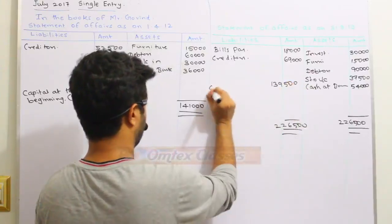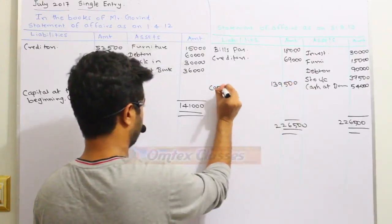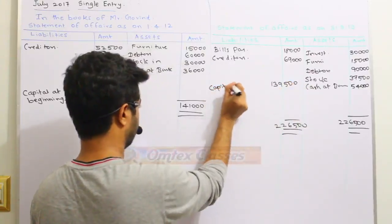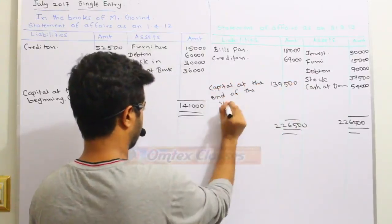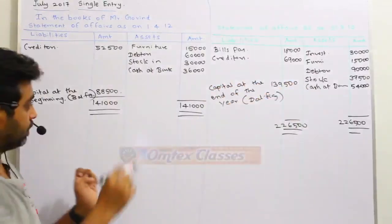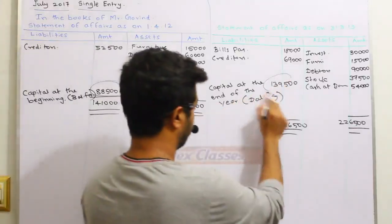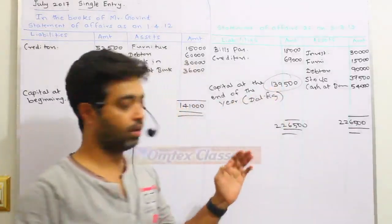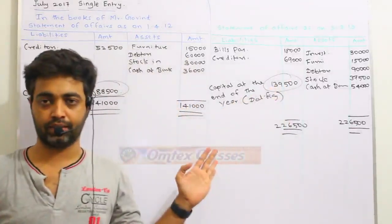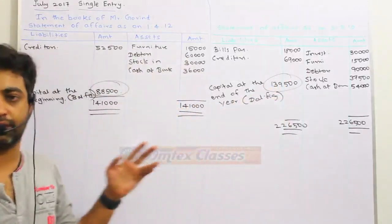We get $55,000 and this is our capital at the end of the year. And if we have access to these two amounts, then we can prepare the statement of profit and loss.